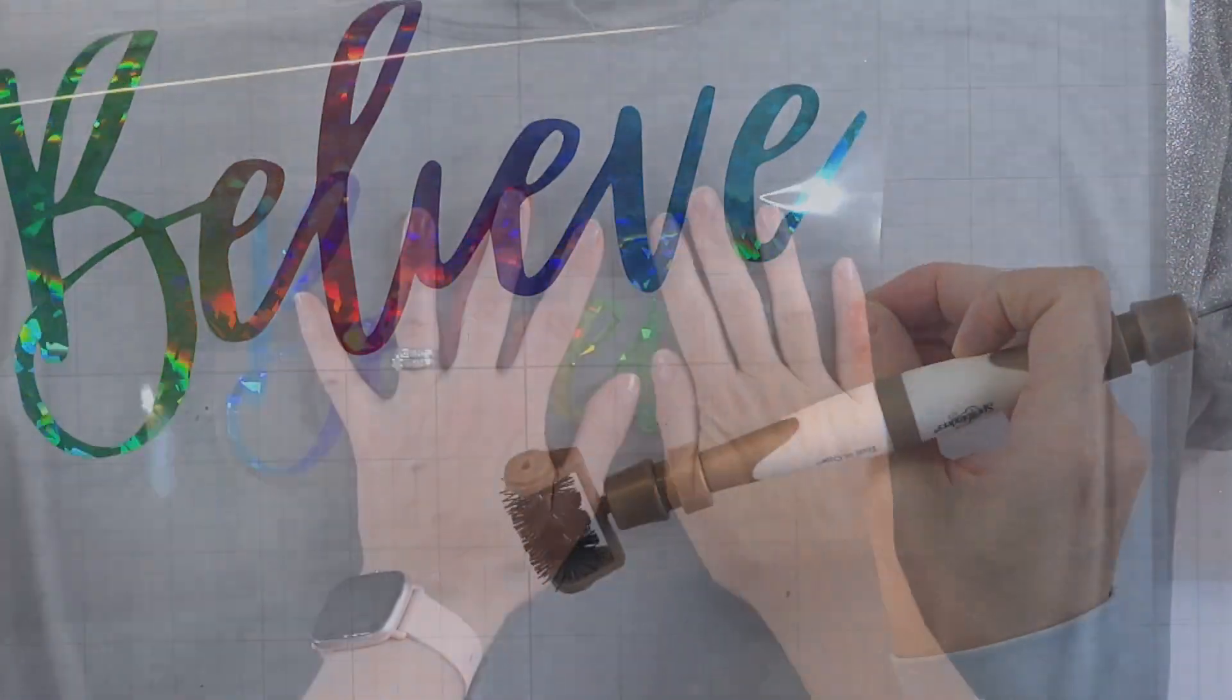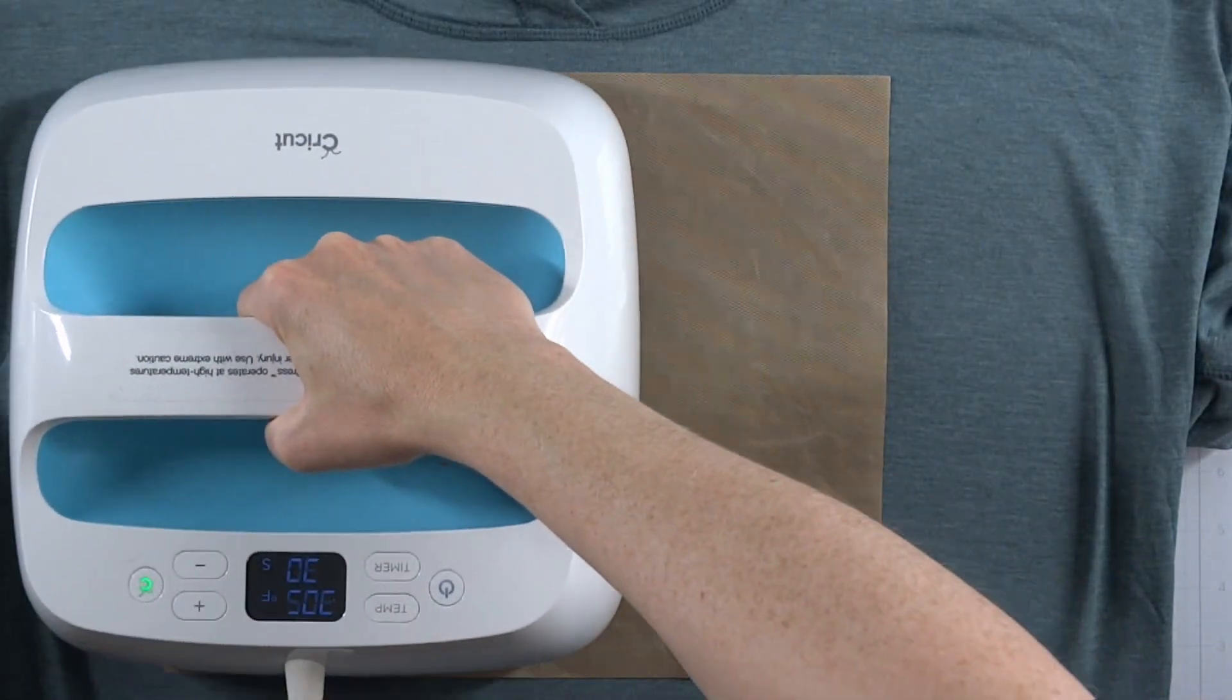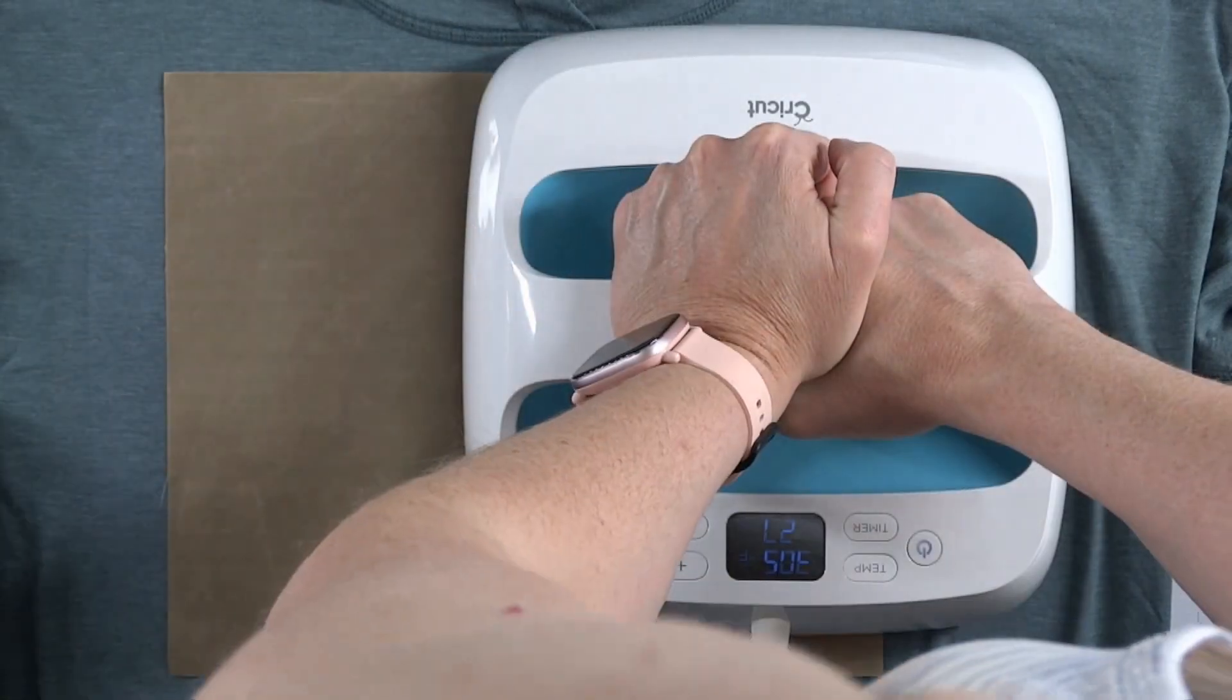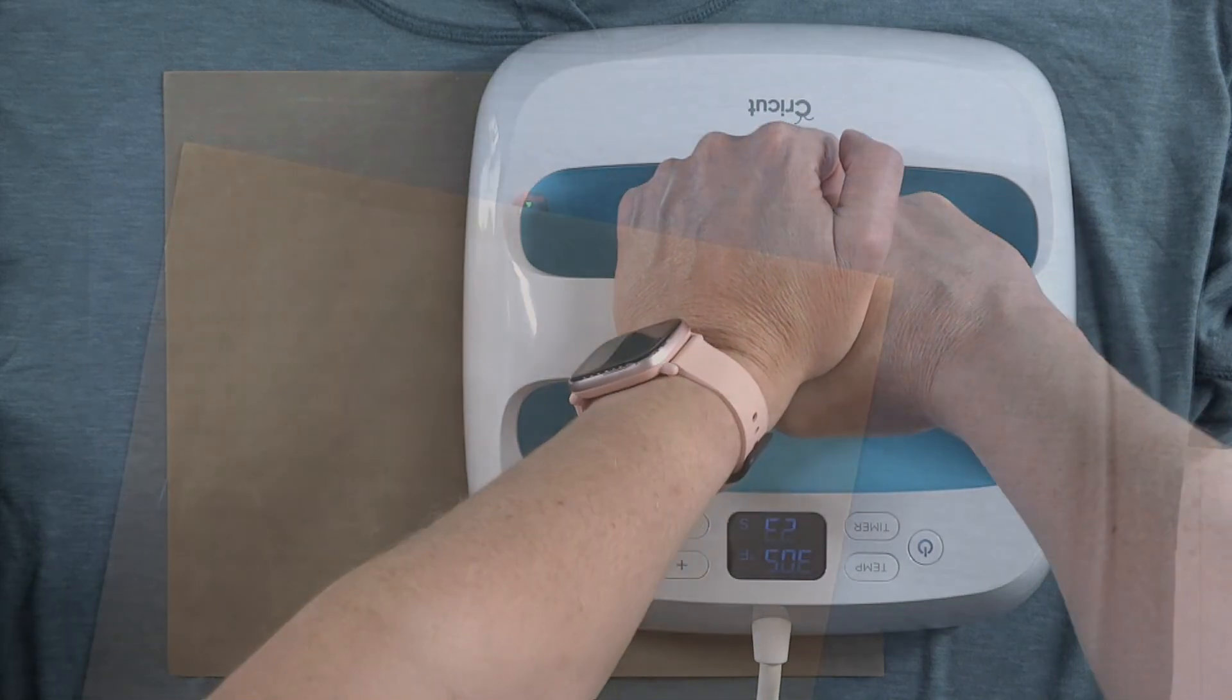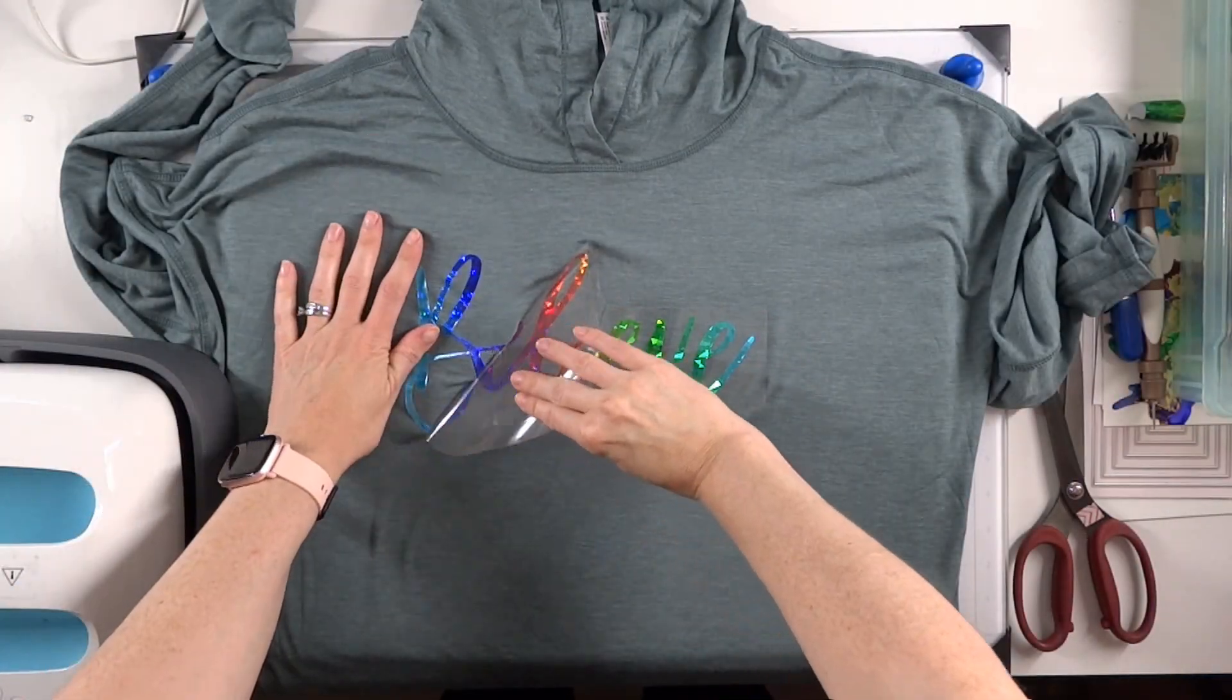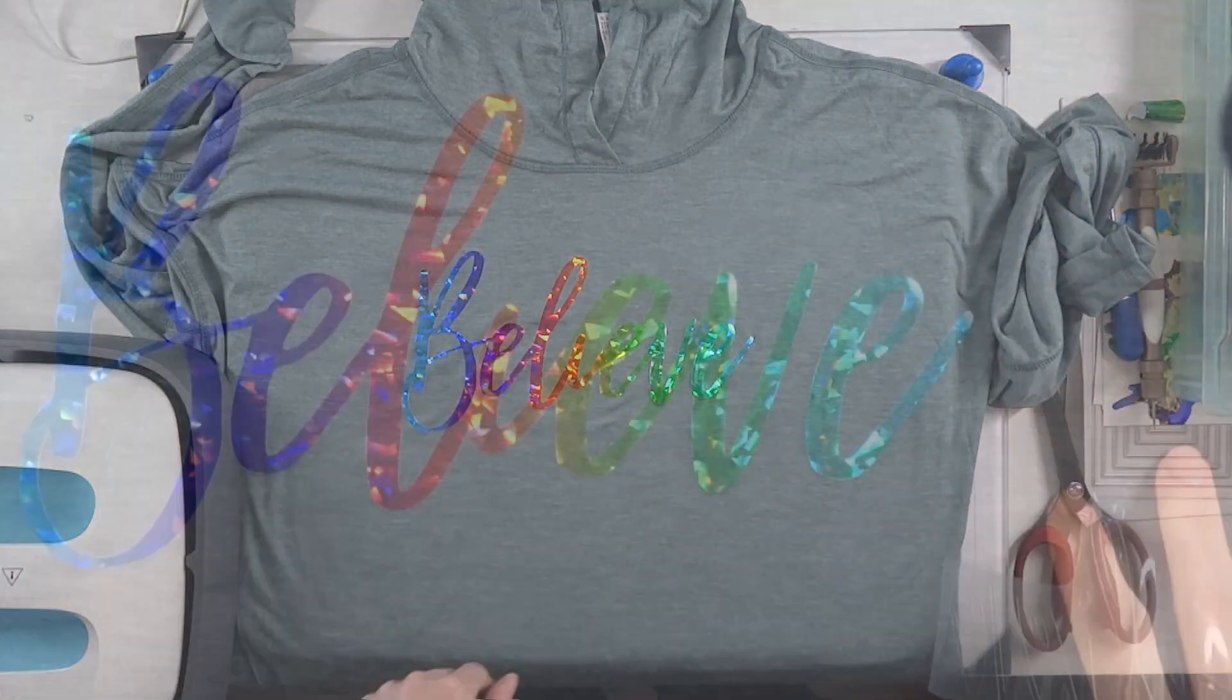This is the word 'believe' that we're going to be putting on our shirt today. Place it down where you want it. I like to iron my shirt first, just give it a good once over. Then it's 30 seconds on each side with lots of pressure. I go on the left side, then the right side. The pressure matters, the heat setting matters, so just use your machine manufacturer's settings.